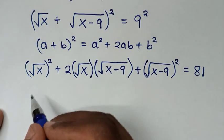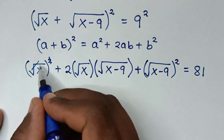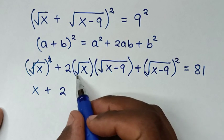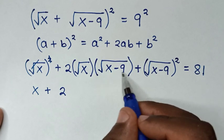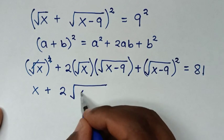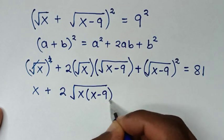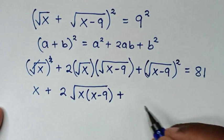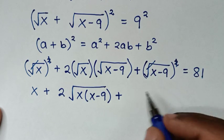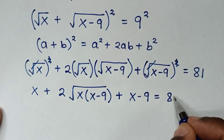In the next step, the square and square root cancel each other. So here it will be x. Then plus 2 times square root of x times square root of x minus 9 — they share a common square root, so it becomes 2 times square root of x(x minus 9). Then the square root cancels the square, giving x plus x minus 9, equal to 81.